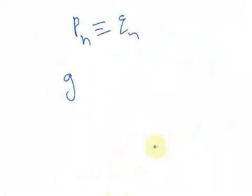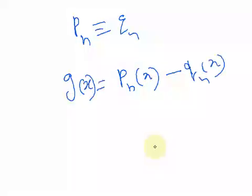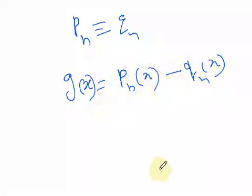To show these two polynomials are identical, let's define g(x) = P_n(x) - Q_n(x). When you subtract one from the other, you get another polynomial. G(x) is also a polynomial in x, and its degree is less than or equal to n. So the difference between these two polynomials is another polynomial whose degree is at most n.